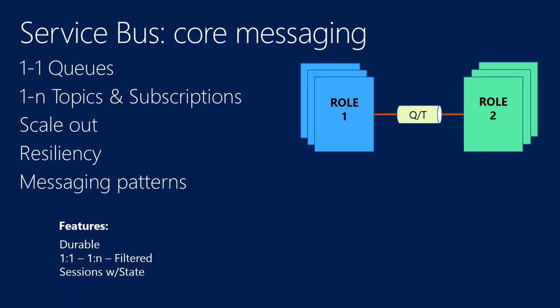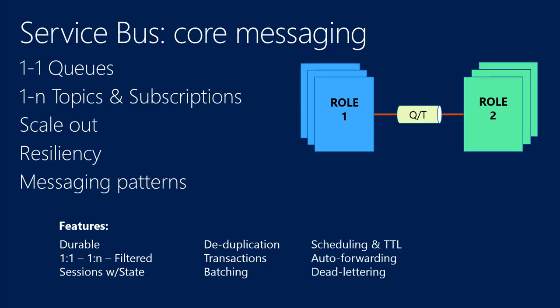This is a huge challenge in the cloud — roles might go away or services might crash, and you don't want to store state in them. Service Bus gives you that durable state machine to store your information. Advanced features like deduplication, transactions, and batching let you do good message processing. Deduplication is very good for services which are not idempotent — you can rely on a single message and we provide dedupe for that. Scheduling with TTL of messages, auto-forwarding, and dead-lettering are all available in Service Bus queues and topics.